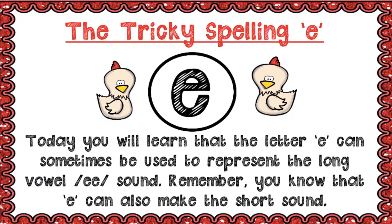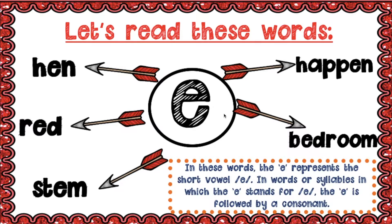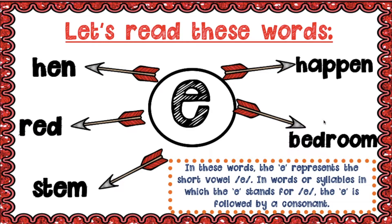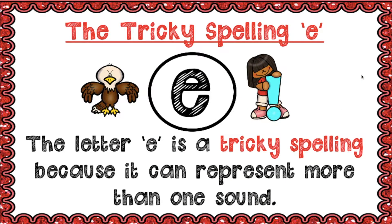You will learn that the letter E can sometimes be used to represent the long vowel E sound. Remember, E can also make the short sound. Let's look at these words and see whether E represents the short or long vowel. We have the words: hen, red, stem, happen, bedroom. In all of these words you're hearing the /ɛ/ sound — that's your short E. The letter E is a tricky spelling because it can represent more than one sound.